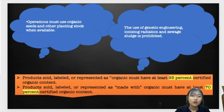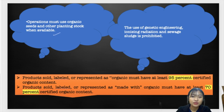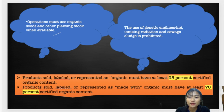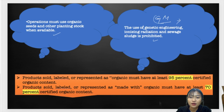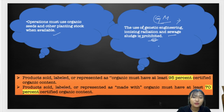Operations must use organic seeds and other planting stock when available, meaning all seeds or planting materials used must be organically produced. The use of genetic engineering, ionizing radiation, and sewage sludge is prohibited. GM crops, ionizing radiation, and sewage sludge are not used in organic farming.